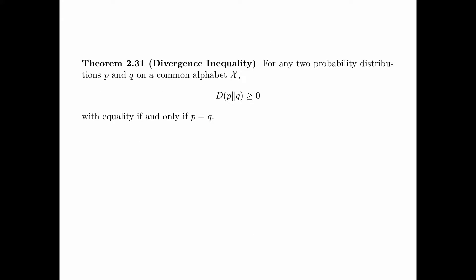Theorem 2.31 is a very important inequality called the divergence inequality. It says that for any two probability distributions p and q on a common alphabet X, D(p||q) ≥ 0, with equality if and only if p equals q.